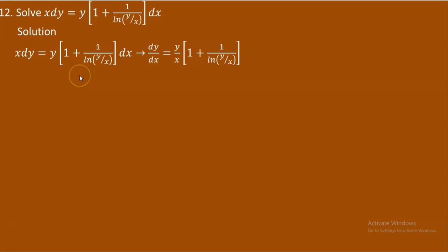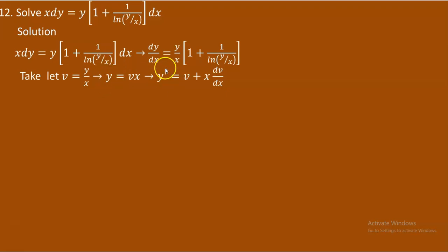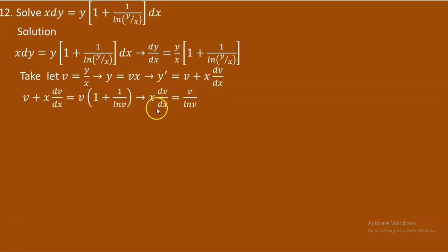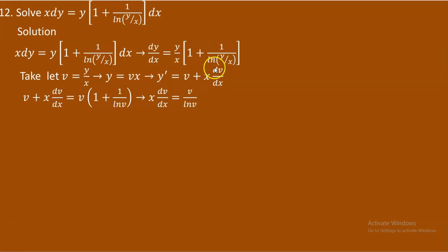Apply the homogeneous technique: let v = y/x, so y = vx and dy/dx = v + x dv/dx by the product rule. Substituting, in place of dy/dx write v + x dv/dx, and y/x becomes v, giving v + x dv/dx = v(1 + 1/ln v).